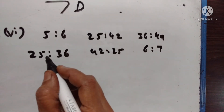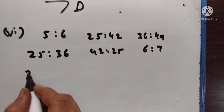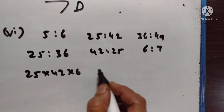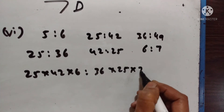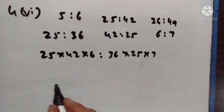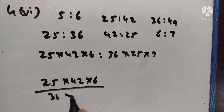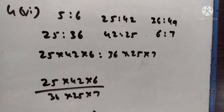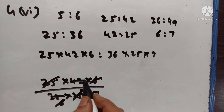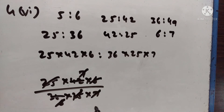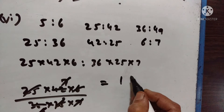The ratio compounded of these three: duplicate ratio of 5 to 6 is 25 to 36; reciprocal ratio of 25 to 42 is 42 to 25; subduplicate ratio of 36 to 49 is 6 to 7. Ratio compounded equals 25 into 42 into 6 upon 36 into 25 into 7. The 25s go off, 6 and 36 cancel to give 1 and 6, and with the 7 everything simplifies. The answer is equal to 1 is to 1.